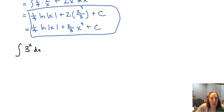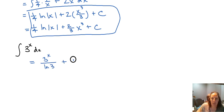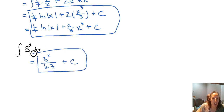Our last example: the integral of 3 to the x. That's not base e — that's base 3. The only difference from the earlier rule is that we now divide by the natural log of the base. So the integral of 3 to the x dx is 3 to the x divided by the natural log of 3, plus C. That's our answer.